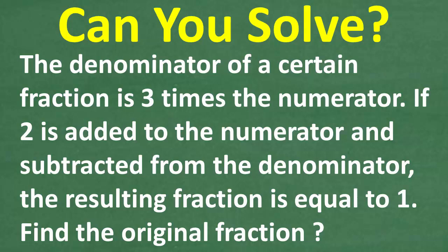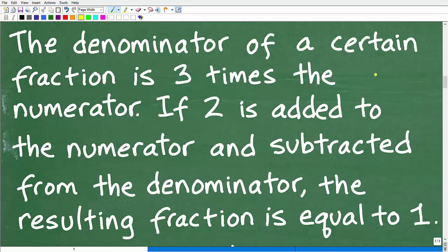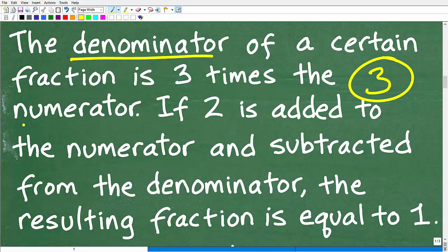We want to find the original fraction. First, we have a word problem, so there's a lot of information here. I always say use the rule of three, which is read a problem at least three times before you start doing anything. When you're reading the problem, if there's some aspect that you don't understand, you need to clear up any confusion because you can't answer a question that you don't understand. In this particular problem, we need to understand the denominator and numerator, and of course this has something to do with fractions.